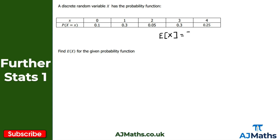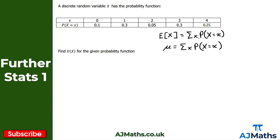The formula for this is the summation of x times the probability of our random variable being equal to little x. This is the mean, so you can also use mu here to represent this — it's the same formula: sigma of x times the probability of our random variable x being equal to little x. They're essentially interchangeable.